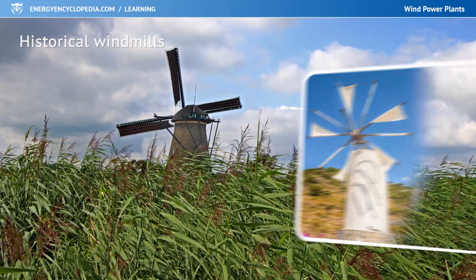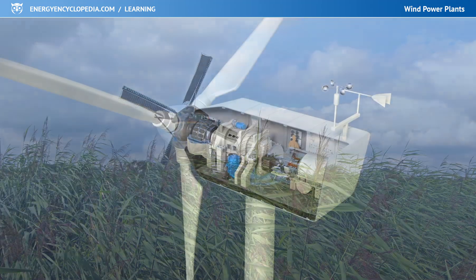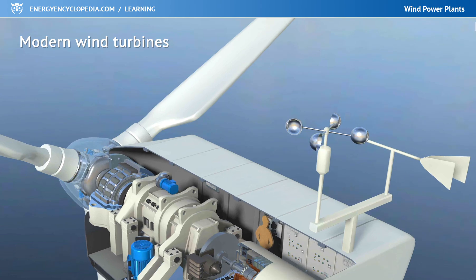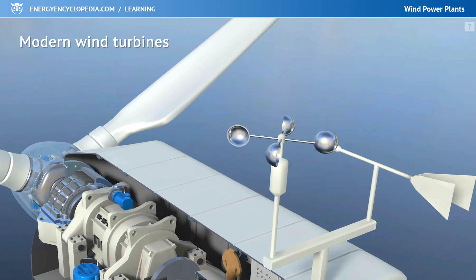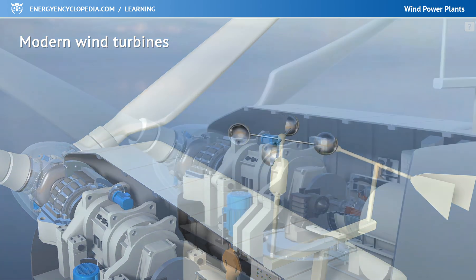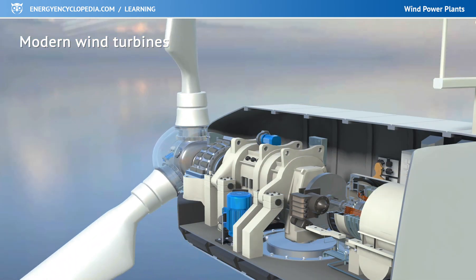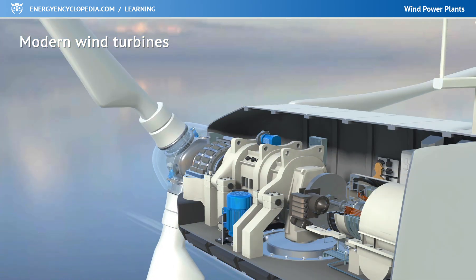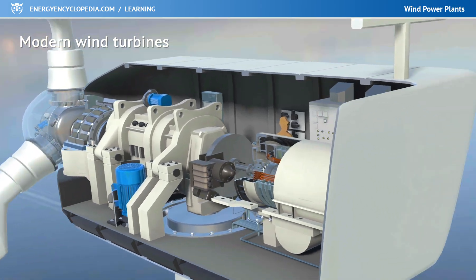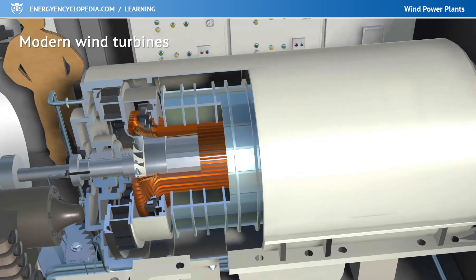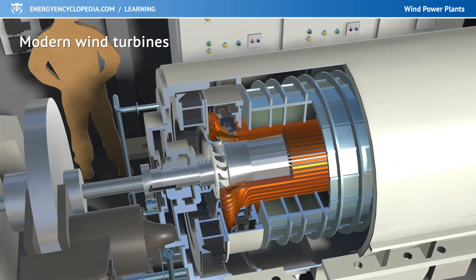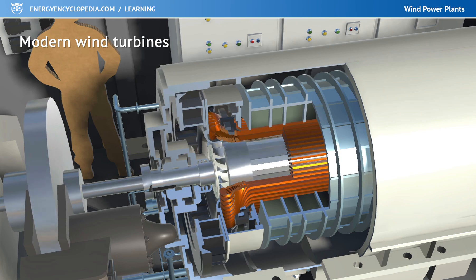Nowadays, wind energy is mainly used to power wind turbines. The wind transfers part of its energy to the turbine blade and spins the rotor, which turns a generator that produces electricity. The more energy the wind can transfer to the blade, the more efficient the turbine would be.